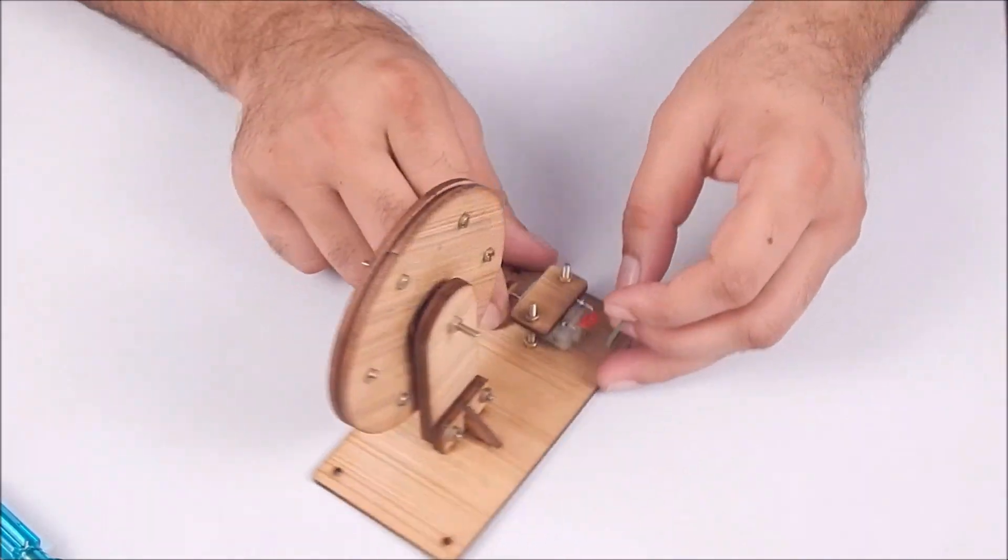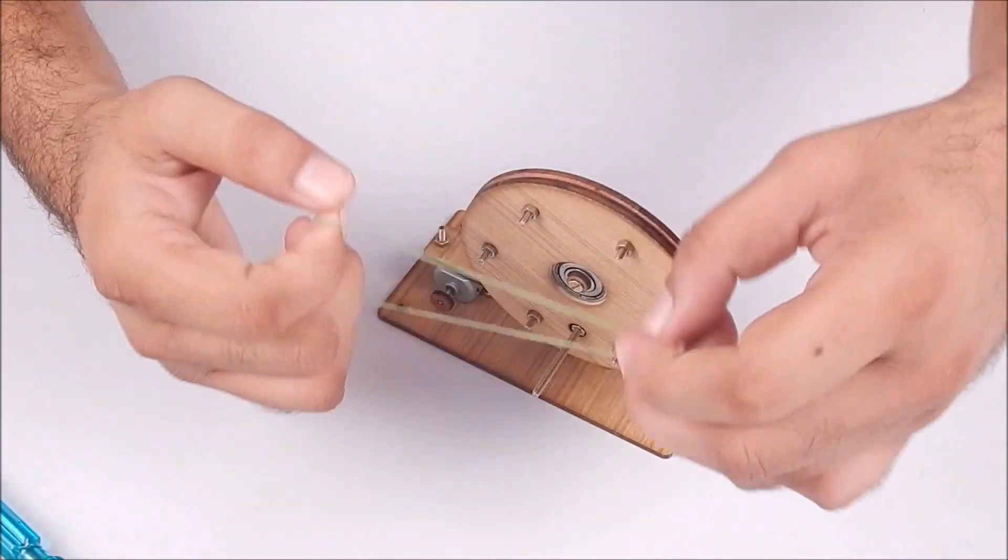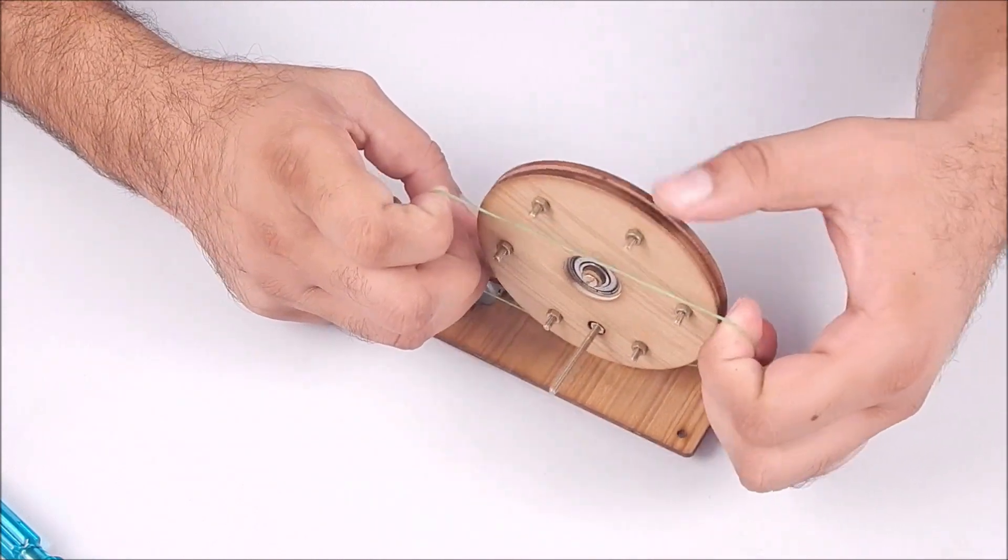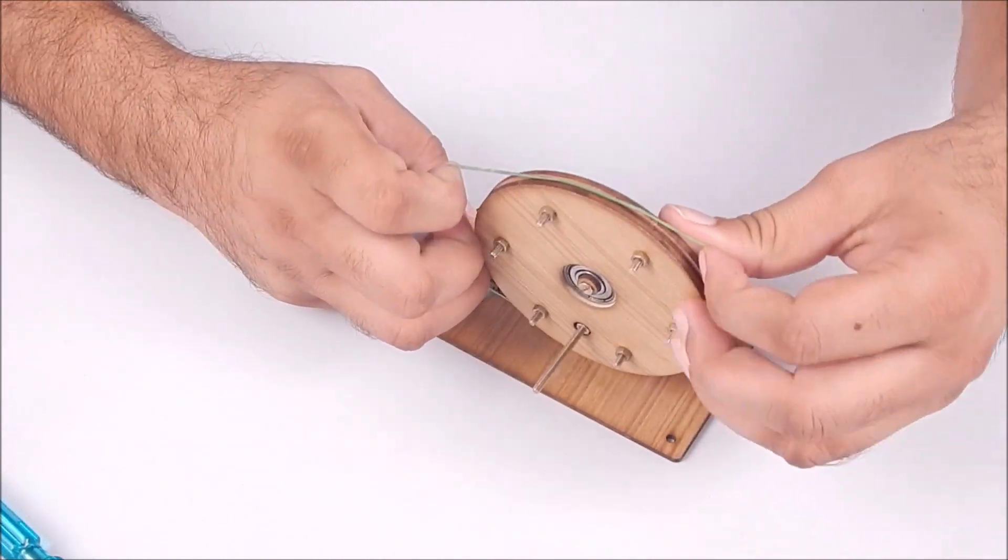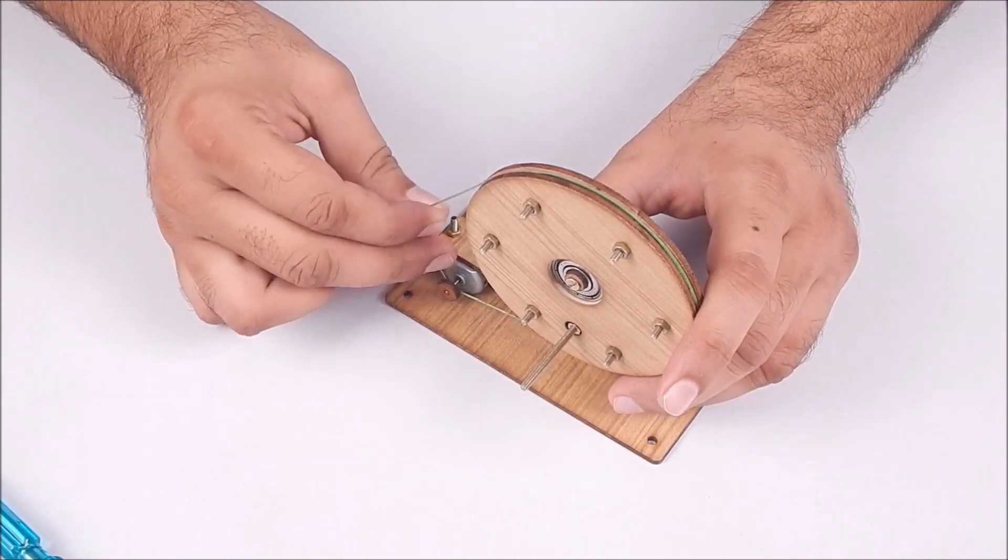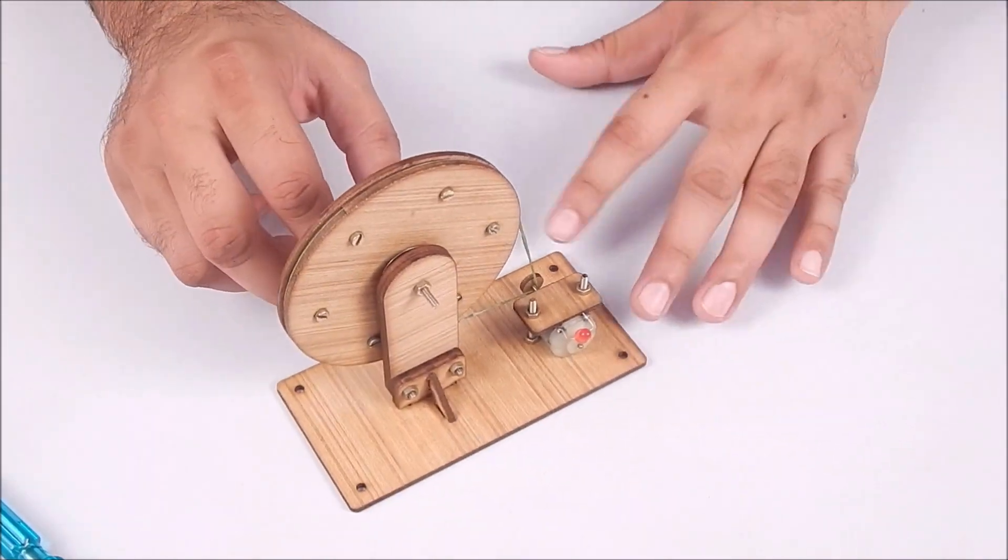Now take the rubber band included in the kit and connect the wheel and motor shaft. Make sure that the rubber band is in a straight line while connecting the motor and wheel. You can make changes by adjusting the motor.